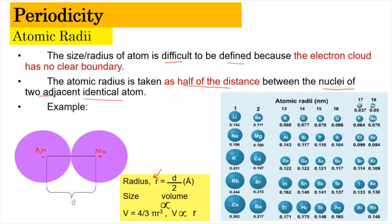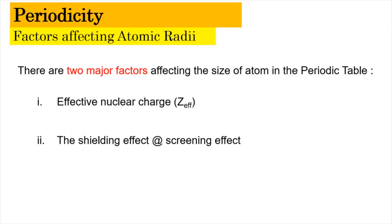On the right-hand side, you can see the atomic radii for each atom obtained experimentally. Across the period, you can see that the size gets smaller. However, when going down the group, the sizes get larger. Now, there are two major factors that affect the size of atoms in the periodic table. First, we have the effective nuclear charge, written as Z_eff. Second, we have the shielding effect, also known as the screening effect.